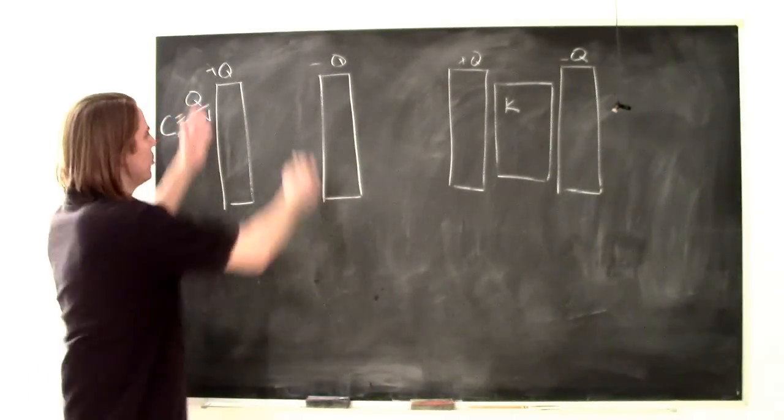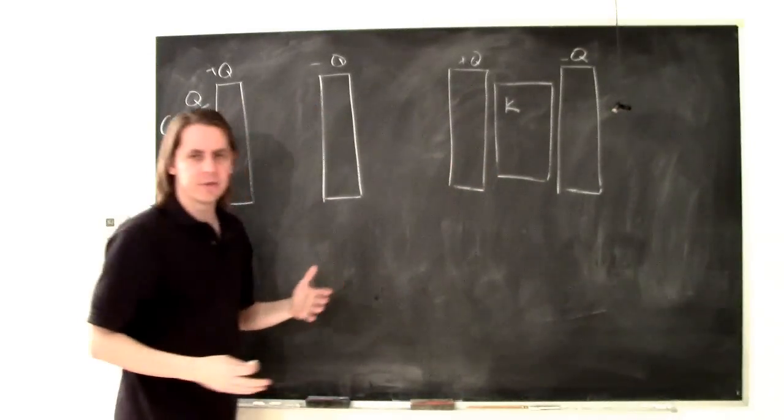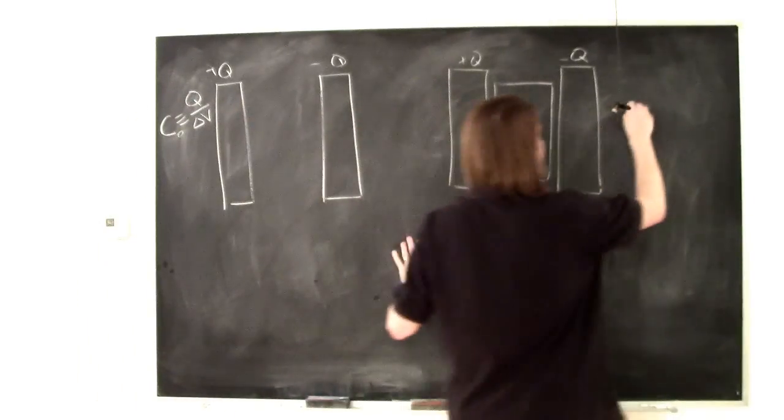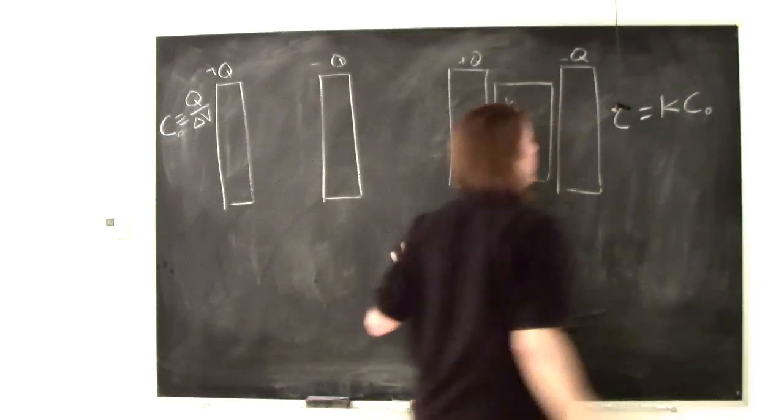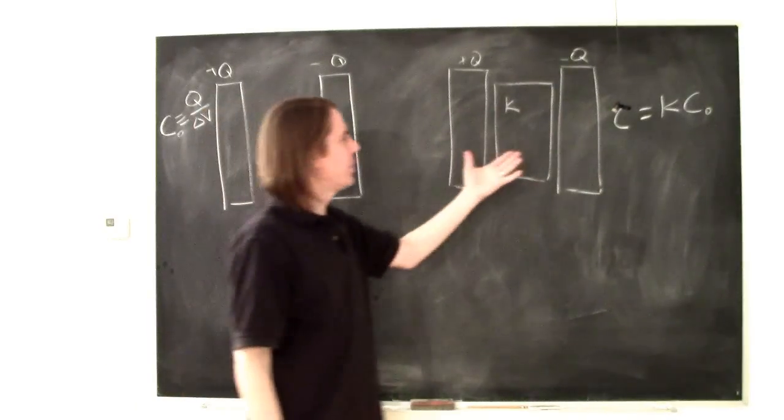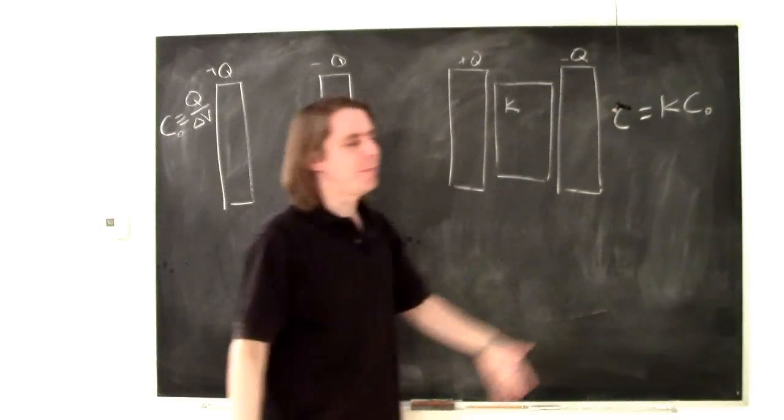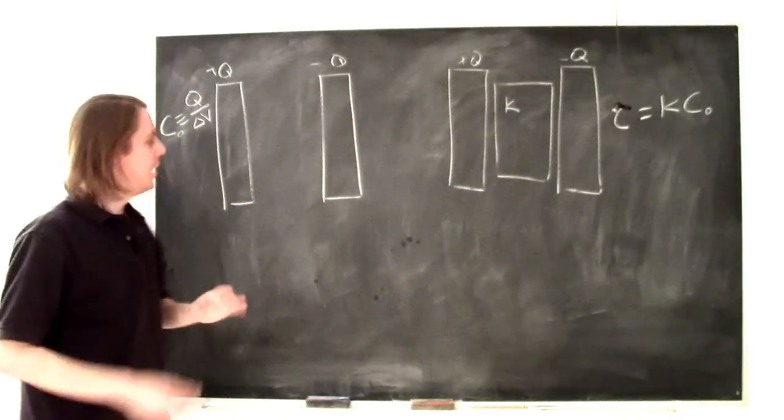So on Friday, we talked about it in terms of keeping the charge on each plate constant, and we found that the new capacitance was basically K, the dielectric constant, times the old capacitance. Dielectric constants are always greater than 1, so the capacitance increases.